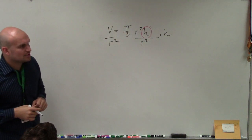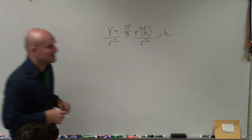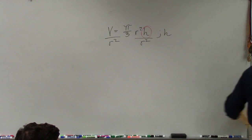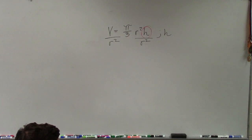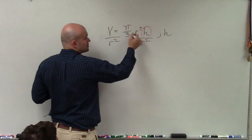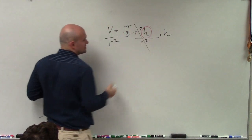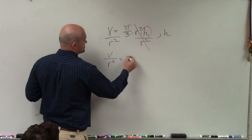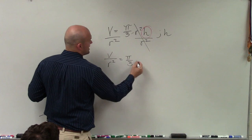When I undo multiplication by r squared, I'm going to divide by r squared. So we divide by r squared. Well, r squared divided by r squared is going to equal 1. So now I'm left with v over r squared equals pi thirds times h.